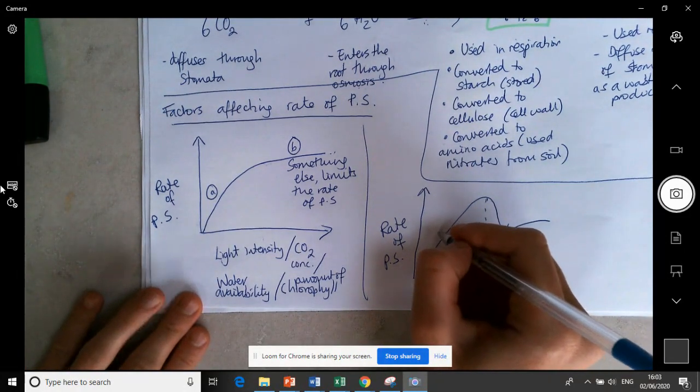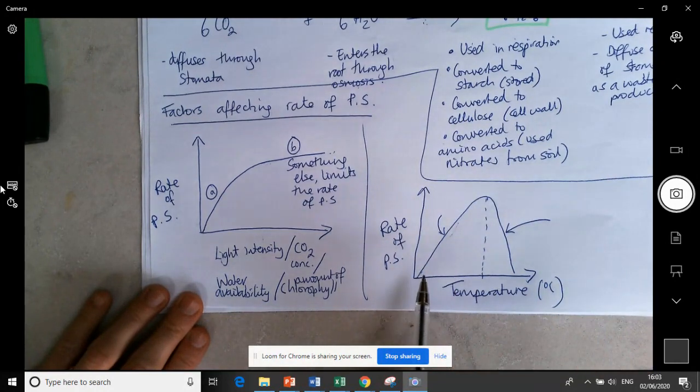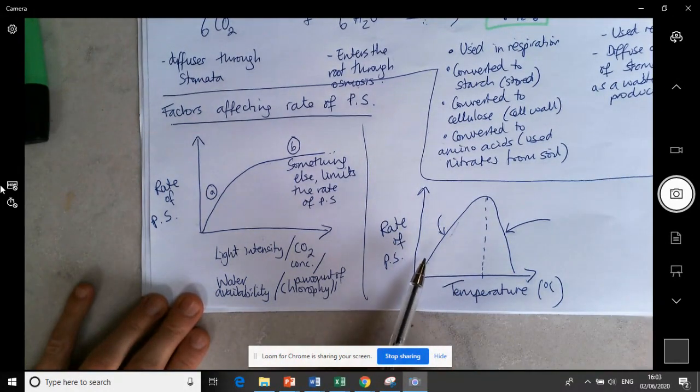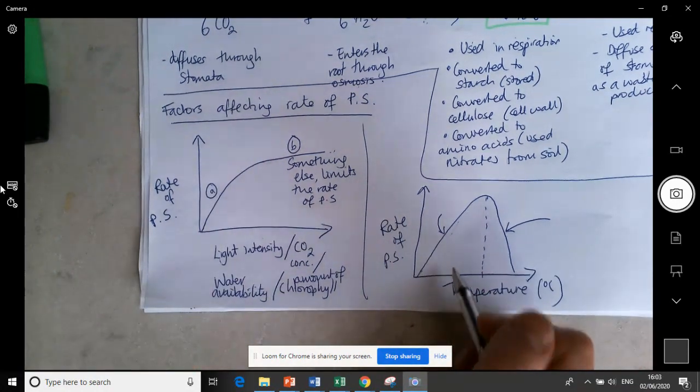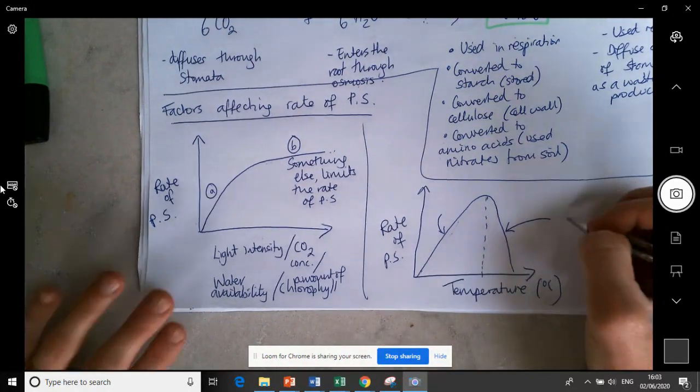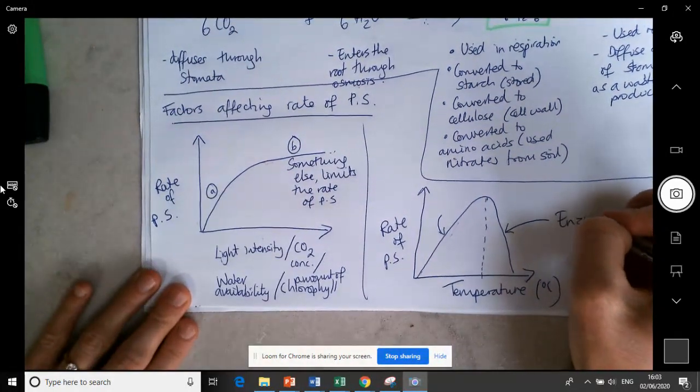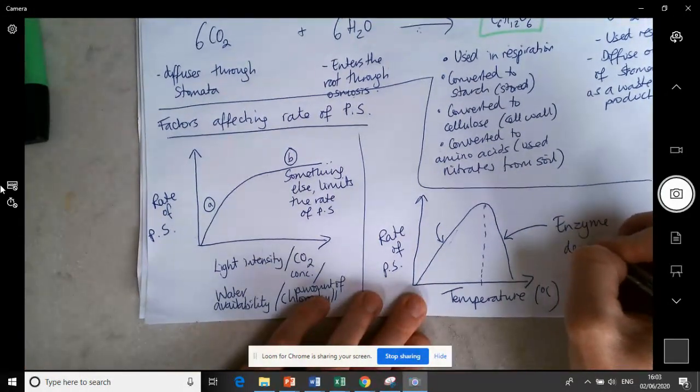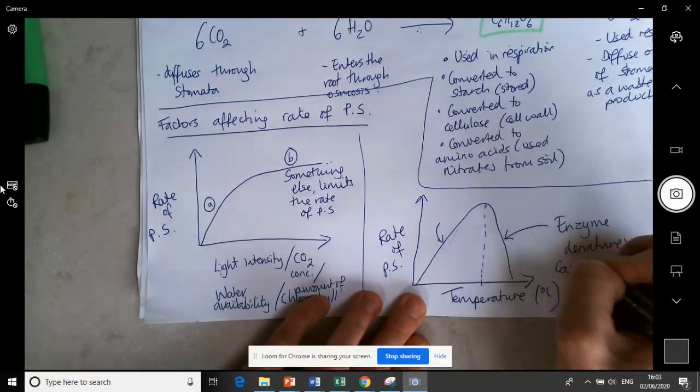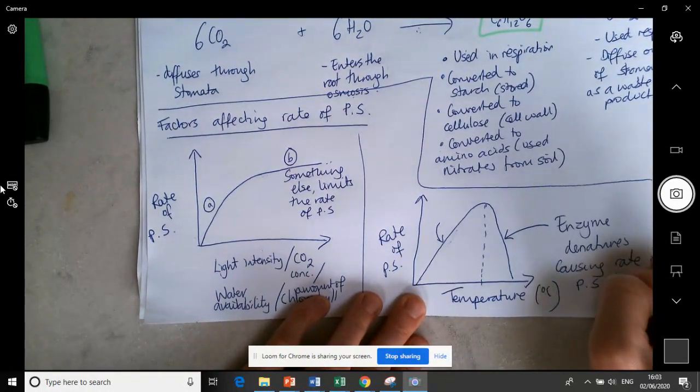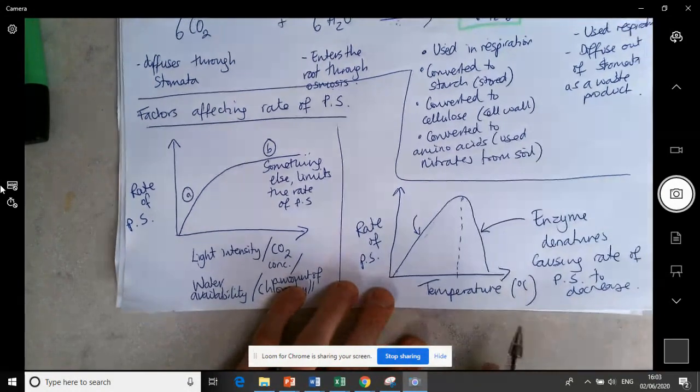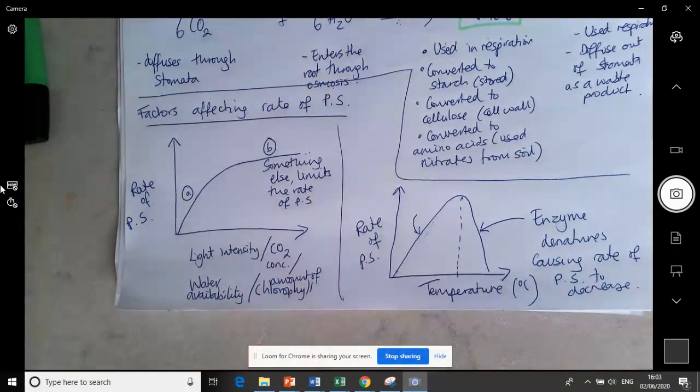So at the beginning we have an increase in temperature causing an increase in rate of photosynthesis, and that's due to increasing kinetic energy. Here the enzyme has denatured causing the rate of photosynthesis to decrease and eventually stop because the enzyme is so deformed and denatured, and therefore is unable to catalyse the reaction at all.